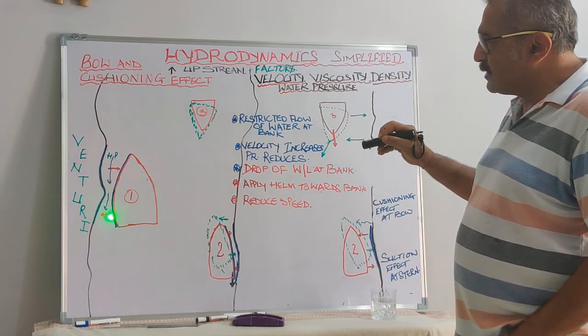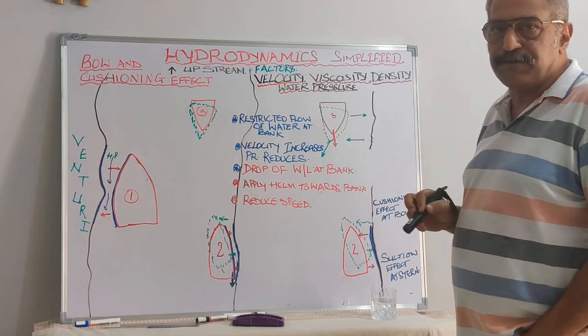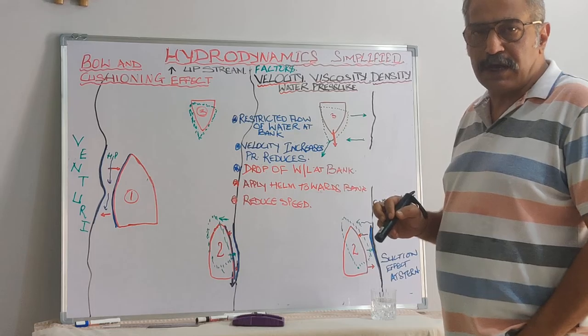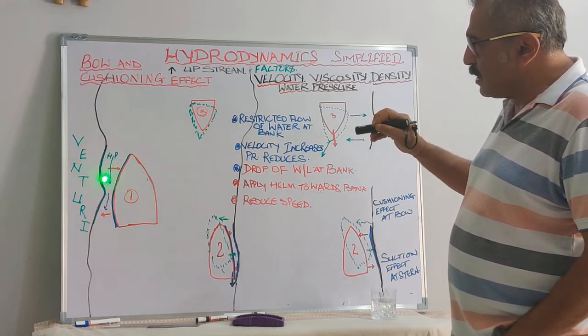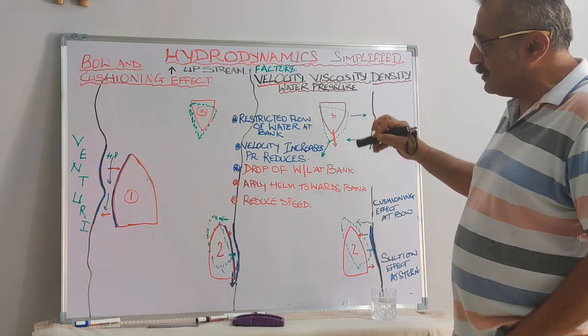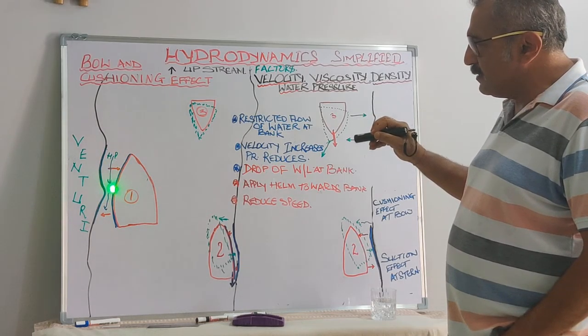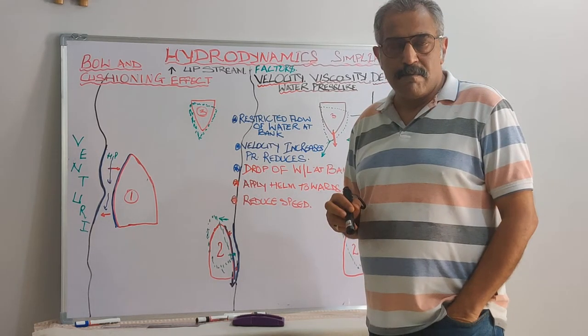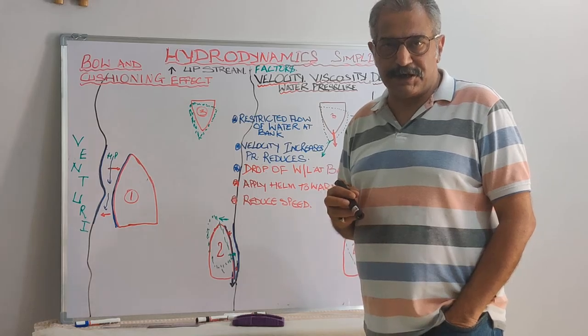And conversely speaking, the stern will experience an opposite effect, the stern getting sucked into the channel. One is because of the gradient of the pressure, the differential pressure between the bow and the stern. And there is a certain element of venturi effect which is also created, by virtue of which a suction effect takes place.